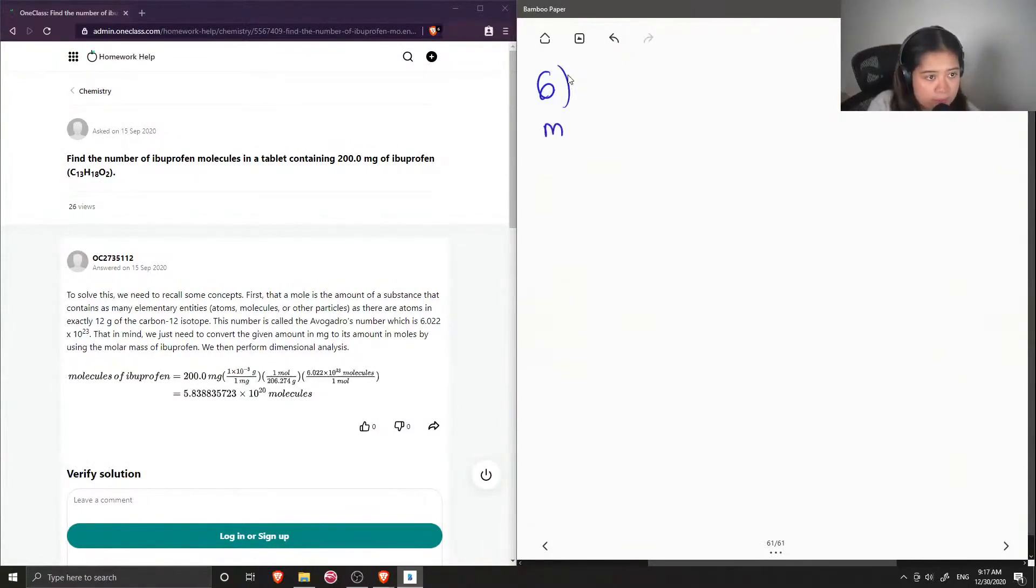First, let's write out what we are given. We're given the mass of ibuprofen, which is 200.0 milligrams, but I will convert it to grams just to make it easier for my calculations in the future. I'm just going to write 0.2 grams. And then they give us the chemical formula for ibuprofen, C13H18O2.